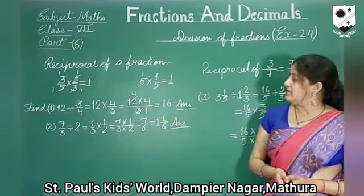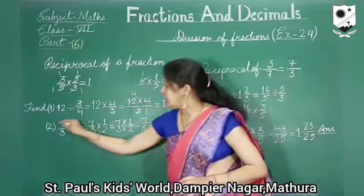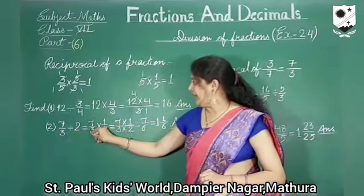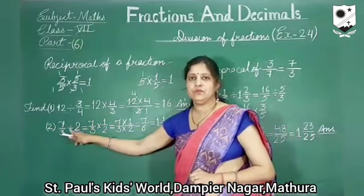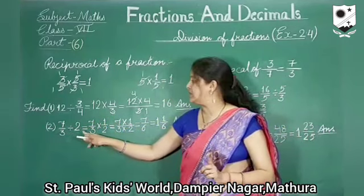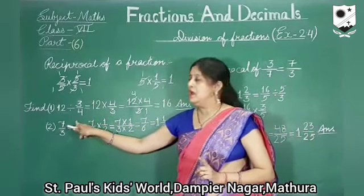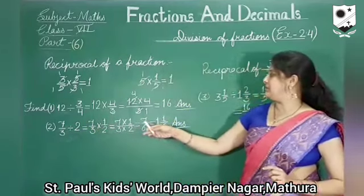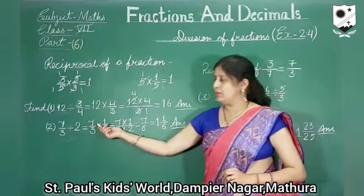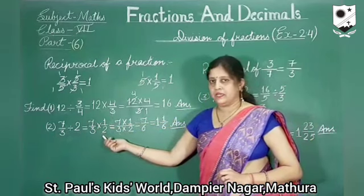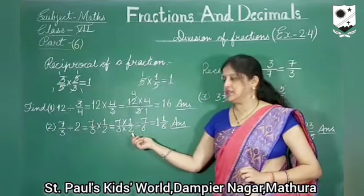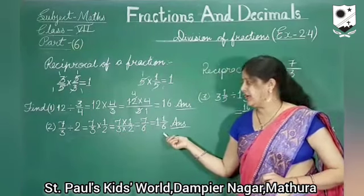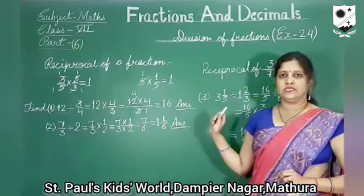When we divide a fractional number by a whole number, like 7 upon 3 divided by 2, we change this division into multiplication and write the reciprocal of the second number. The reciprocal of 2 is 1 upon 2. Now multiply numerator by numerator and denominator by denominator — 7 ones are 7 and 3 twos are 6. You can write the answer in mixed fraction also — it gives 1 whole 1 upon 6.